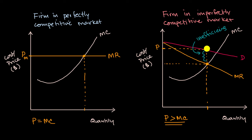Folks are willing to pay more than the marginal cost, but you still have no motivation to produce more. If you produce more, even though the price is higher than the marginal cost, your marginal revenue is going to be below the marginal cost. And so you would be taking a hit, in aggregate, on those extra units.